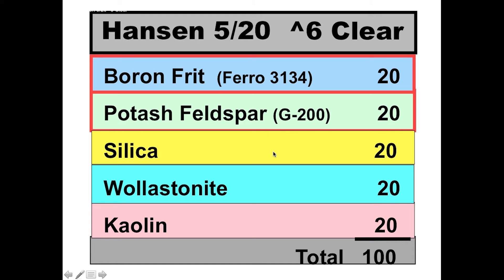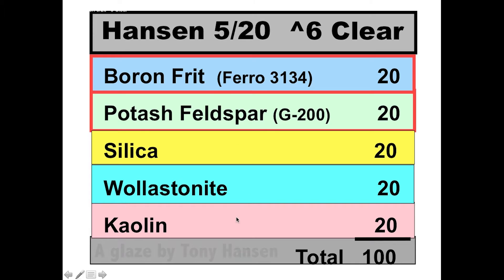This is Hansen's 520, a cone 6 clear glaze. Same thing — we have five ingredients and it's called 520 because they're all 20%, and the glaze always adds up to a hundred percent. The colorants are not included in that hundred percent base glaze.